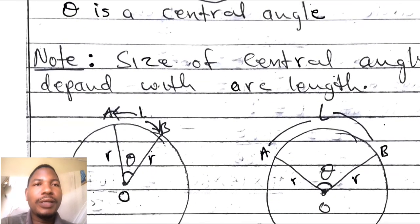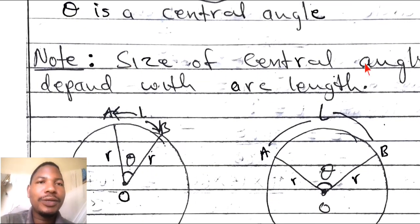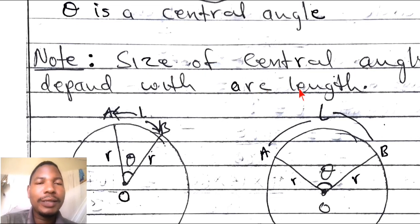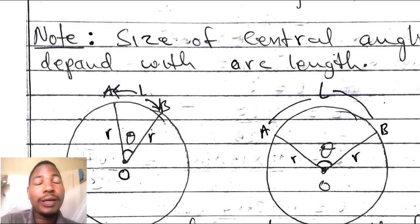Take note that always the size of a central angle depends on the arc length. So when you have a large arc, the central angle also increases. For a small arc, the central angle also decreases.